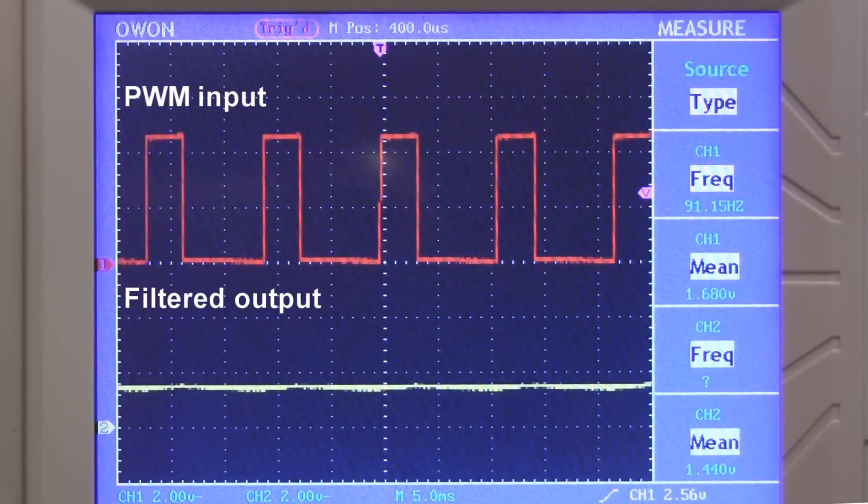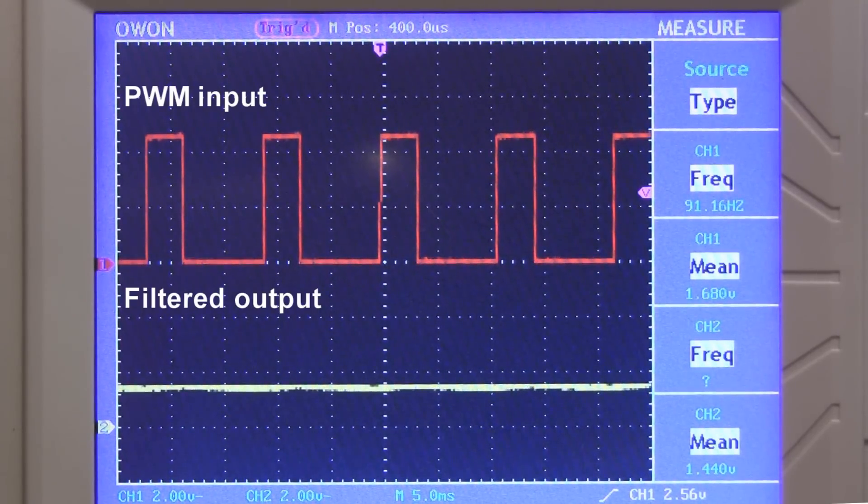Now I've lowered the duty cycle of the signal, and on the input the average voltage is 1.68 volts. After the filter it looks like we're very close to clean DC with an average voltage of 1.44 volts.